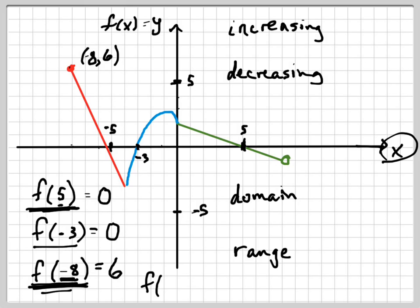They're not necessarily going to be pretty numbers, and we might have to guesstimate. But what's f of 2? Again, you go to 2 on the x-axis, starting at the origin. Go over to 2, and I go straight up or down to the graph. Scanning straight up or down — it's right there, just barely above 1. So I'm going to guesstimate about 1.1. f of 2 is about 1.1. That's how you do function values.